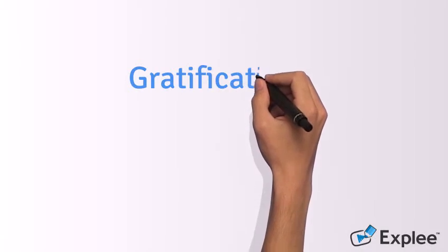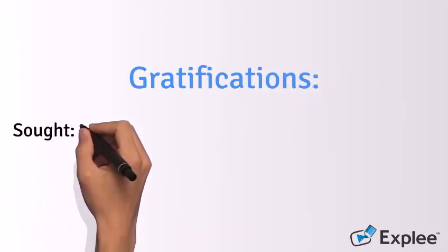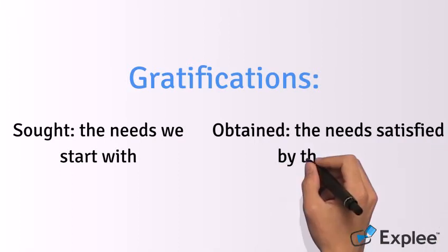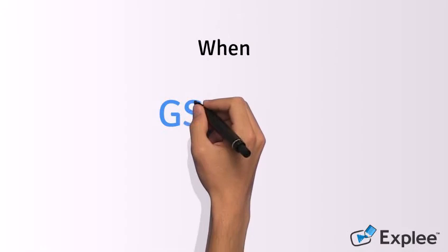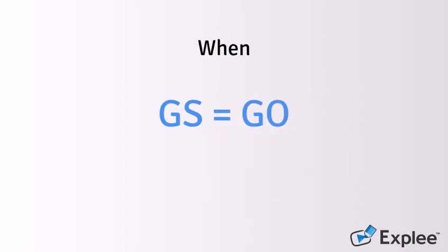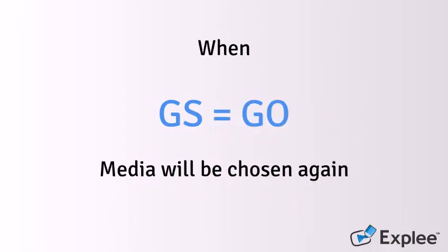Another important aspect of uses and gratifications theory is understanding why audiences choose media to fulfill their needs. Uses and gratifications researchers distinguish between gratifications sought, or the needs we think we are pursuing, and gratifications obtained, the needs actually satisfied by the media. If the gratifications obtained from the media choice are close to or the same as the gratifications sought, the audience is more likely to choose that media when the need returns.